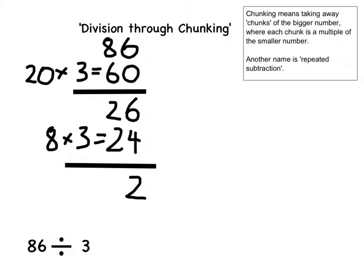Looking back at my working out, I can see that 86 is made up of 20 threes added onto 8 threes with a remainder of 2. Another way to think of it would be this chunk added onto this chunk with a remainder of 2. This means that 86 divided by 3 equals 28 with a remainder of 2.